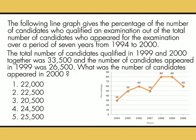Next question with the same graph. The following line graph gives the percentage of the number of candidates who qualified an examination out of the total number of candidates who appeared for the examination over a period of 7 years from 1994 to 2000. The total number of candidates qualified in 1999 and 2000 together was 33,500, and the number of candidates appeared in 1999 was 26,500. What was the number of candidates appeared in 2000? 1) 22,000, 2) 22,500, 3) 20,500, 4) 24,500, or 5) 25,500. The correct answer is 20,500.